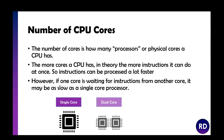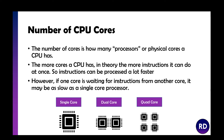The number of CPU cores refers to how many physical cores a CPU has. More cores means more instructions can be processed at once — single core has one, dual core has two, quad core has four, octa core has eight, and some CPUs now boast 16 cores. However, if one core is waiting for another to finish, it can be just as slow — so more cores doesn't always mean faster performance.